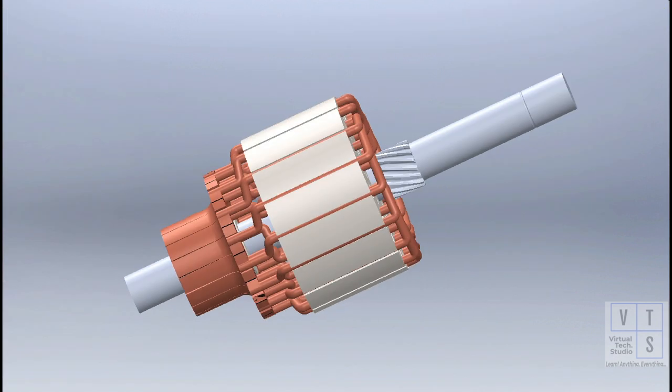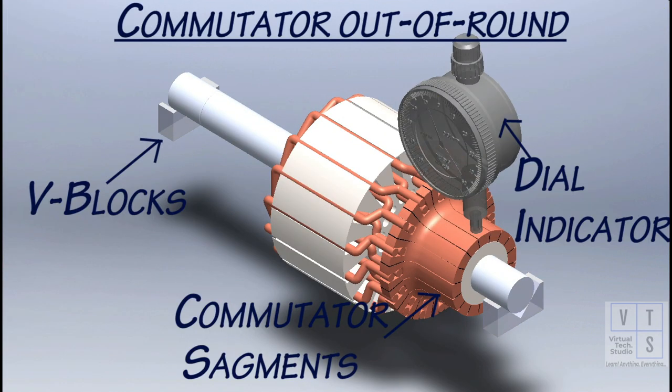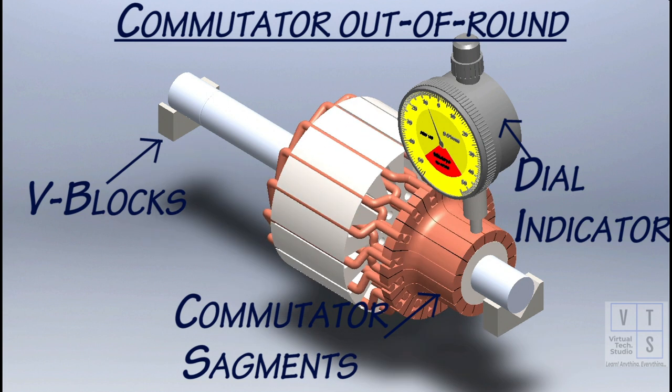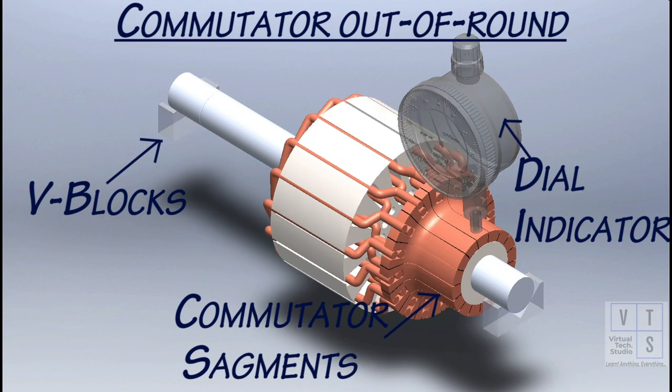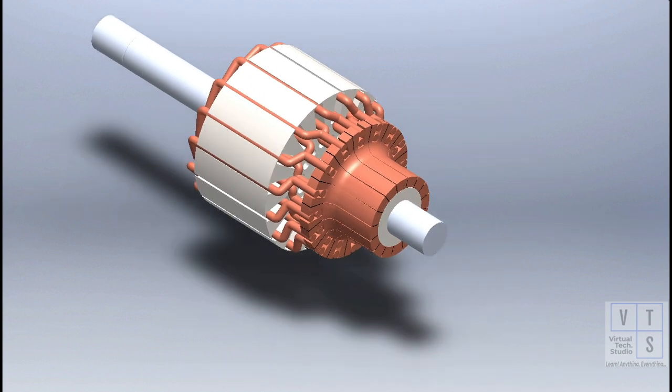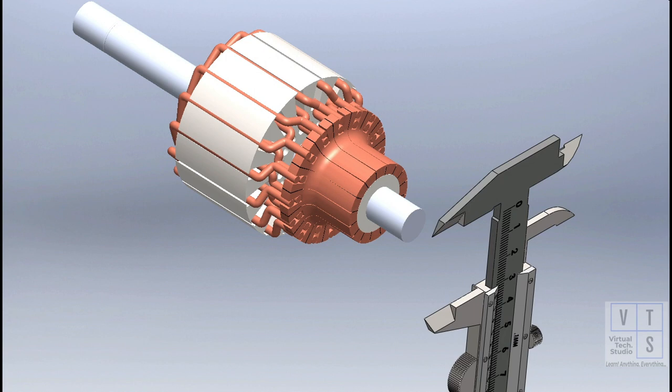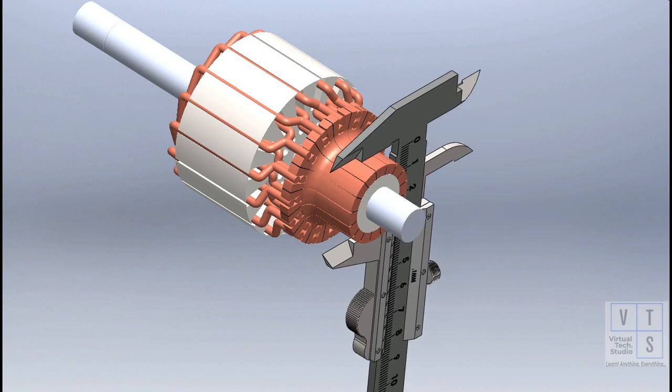Check commutator for run-out with armature supported on V-blocks and compare out of round value with the manufacturer recommendations. Correct it by using lathe if required. Check for wear and replace armature if diameter is below the prescribed manufacturer limit.